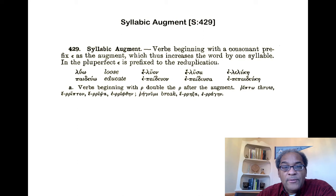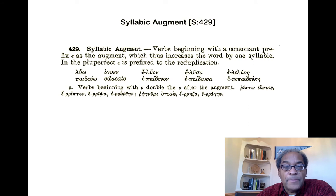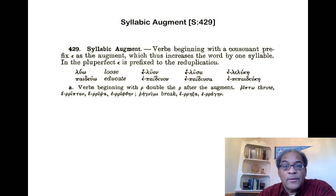Verbs that begin with a rho double the rho after the augment. So rhipto, meaning 'throw,' has e-rripton as its imperfect, that rho having been doubled.